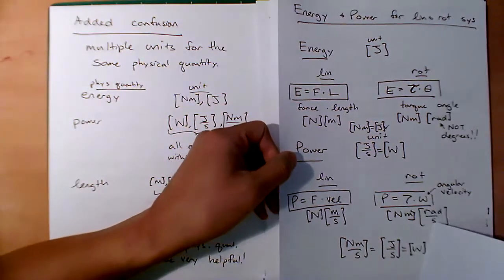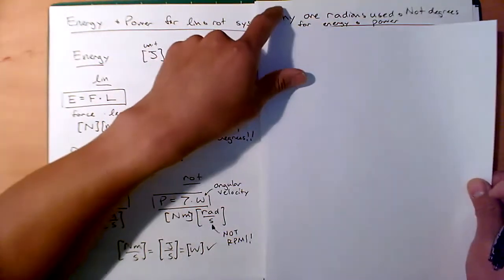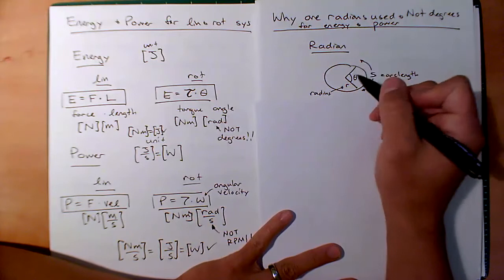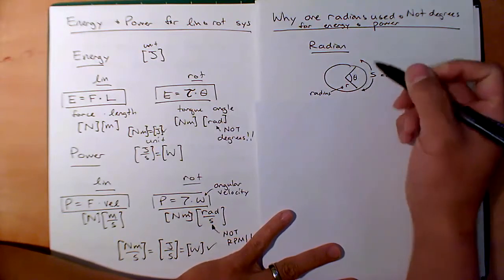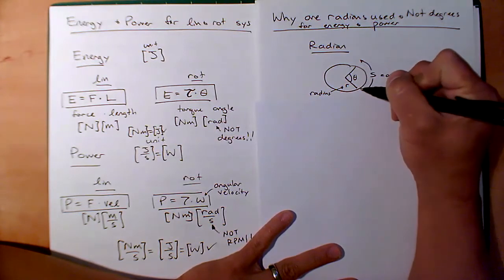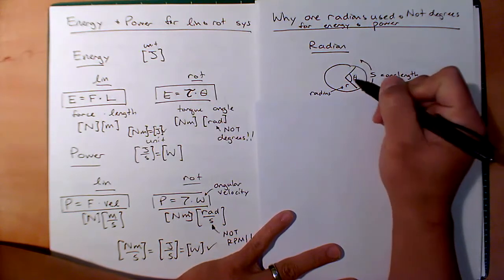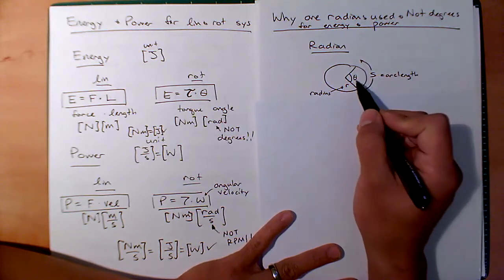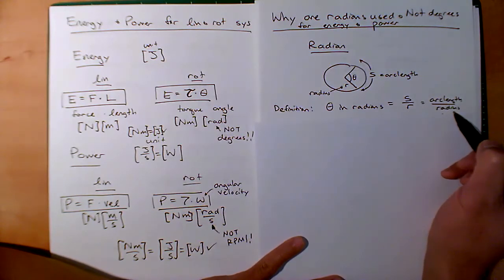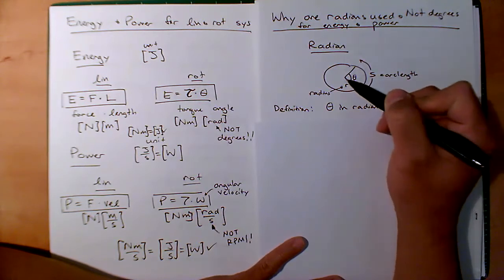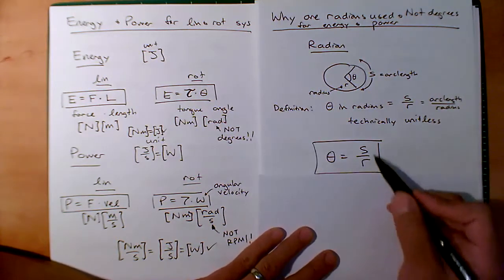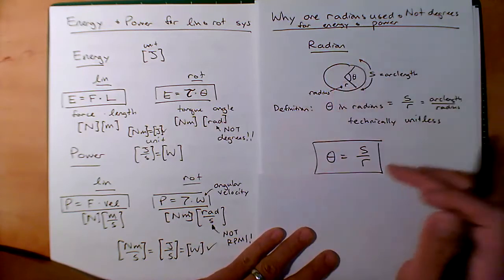Let's review what a radian is, since radians — not degrees — are used for energy and power. We have a circle with some radius. If we prescribe some angle, the arc length S is associated with that angle. The definition of this angle in radians is S divided by R — arc length divided by radius. Notice if S is in meters and R is in meters, this is technically unitless.